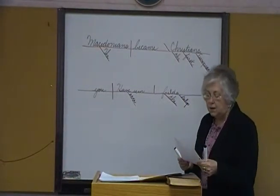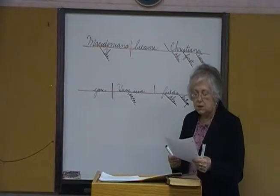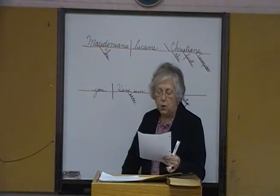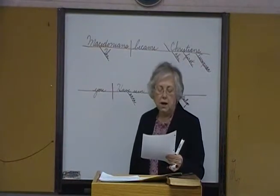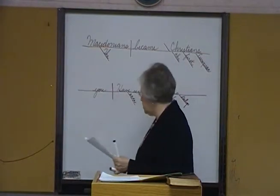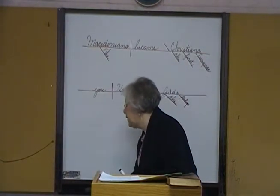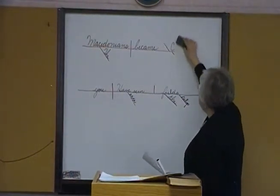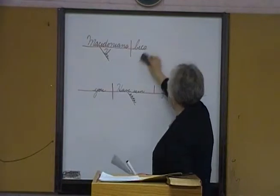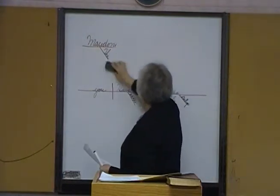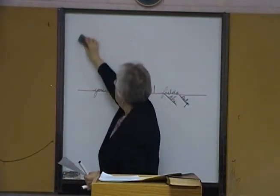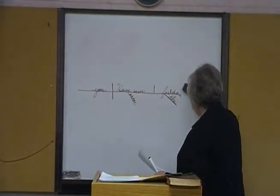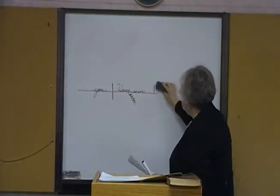Now let's go on to our next sentence: 'Great ridges and trenches on the ocean floor form vast ranges of hidden mountain ranges.' Let's just give ourselves some room. Whenever you diagram, you always want to give yourself plenty of room so that you can draw your horizontal and vertical lines without having them run together.